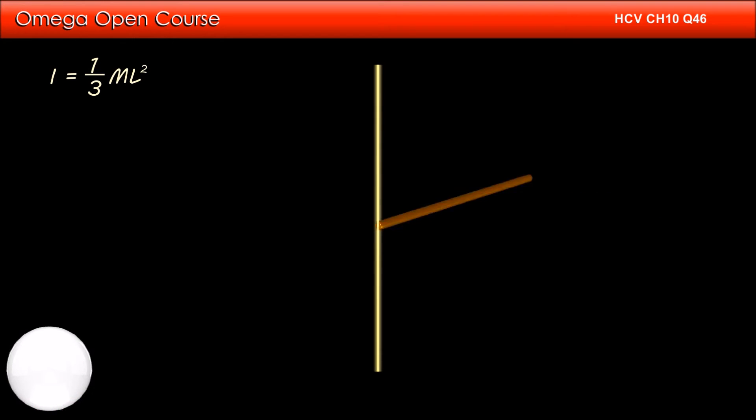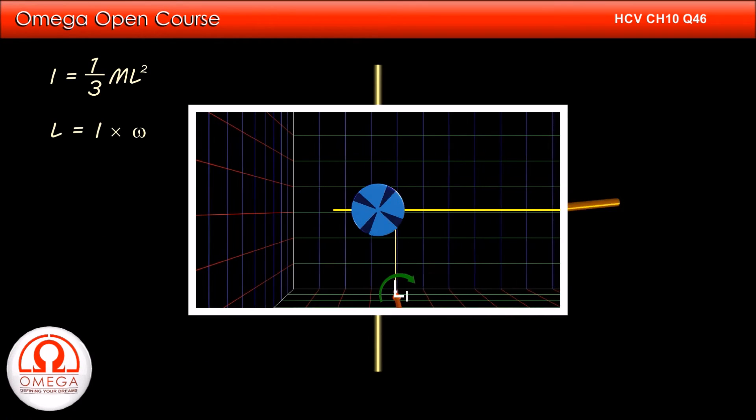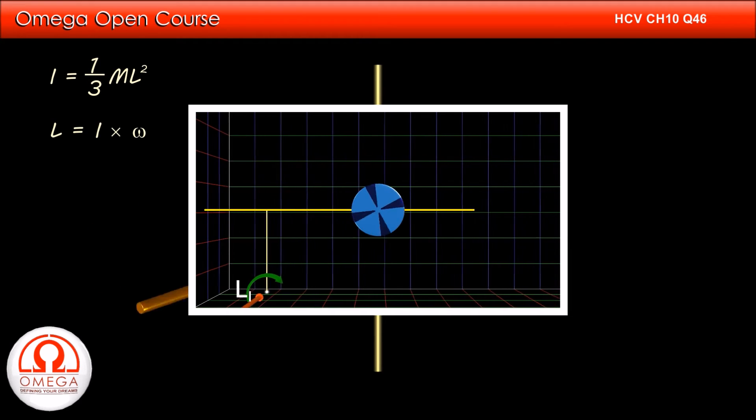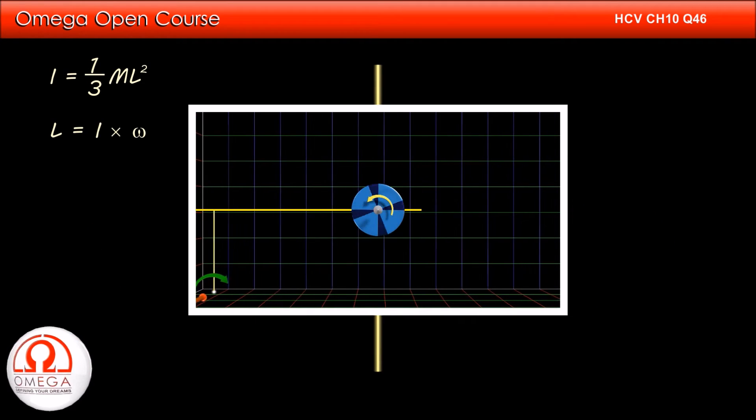Since the rod is undergoing pure rotation about the axis, its angular momentum is moment of inertia times angular speed. If you want to know how to write angular momentum in different cases, you should watch our video on angular momentum. The link for the video is shown on the screen and given in the descriptions below.